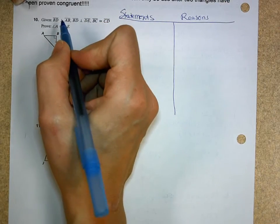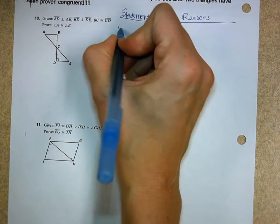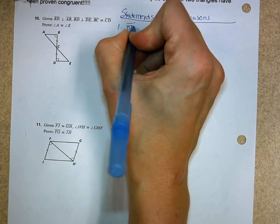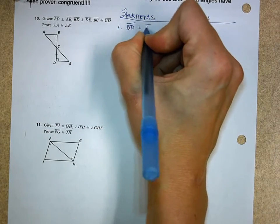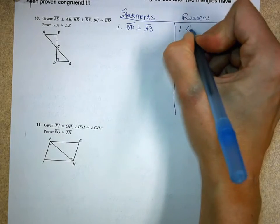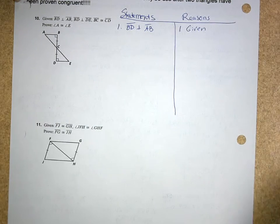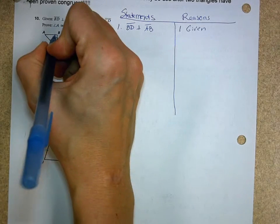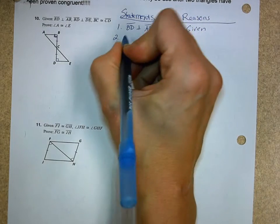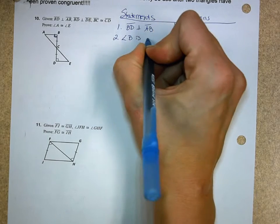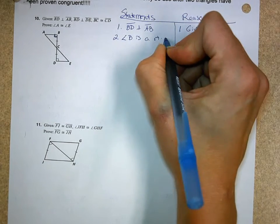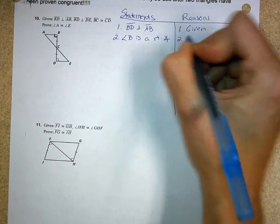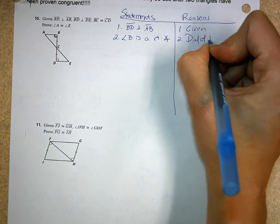So here's our first given. So with the first one, I have segment BD is perpendicular to segment AB. That's given. Now, what do perpendicular lines give us? They give us right angles. So that's what you have to tell me first. So here's the right angle. They already have it marked. So angle B is a right angle. And that's just the definition of perpendicular lines.